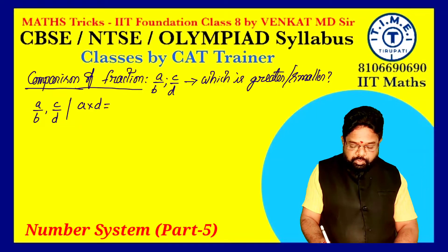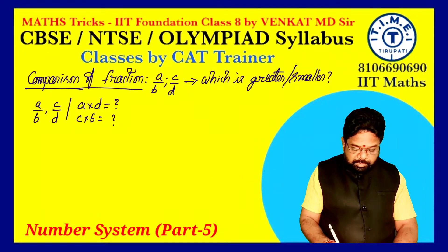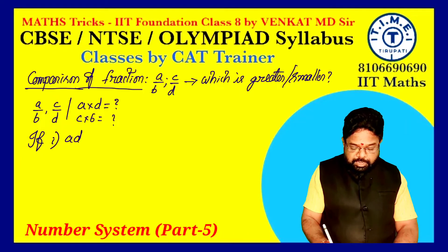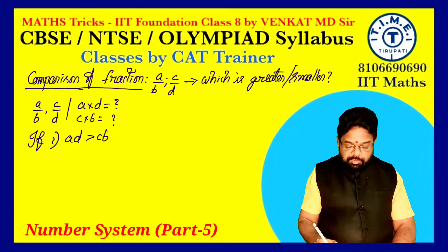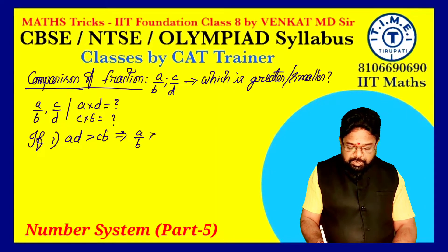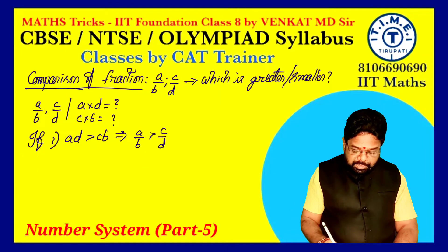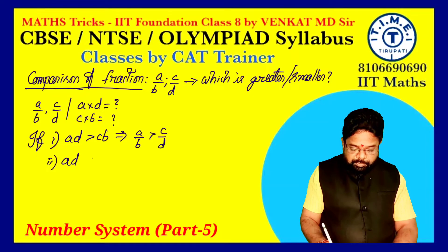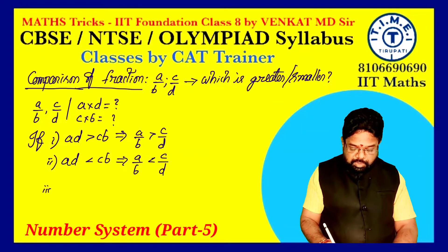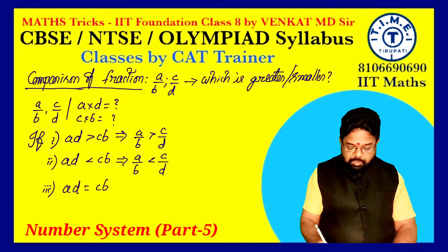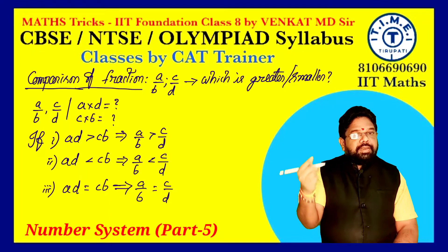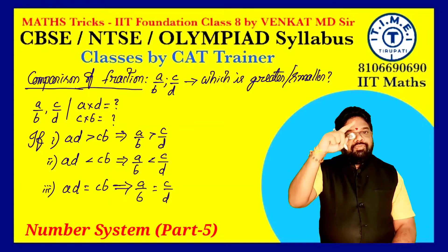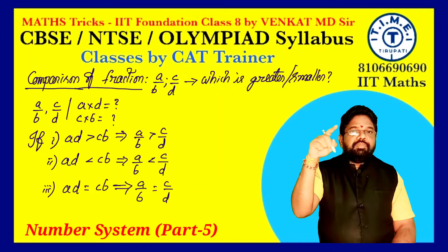For fractions A/B and C/D, just do the cross multiplication: calculate the value of A×D and C×B. If A×D is greater than C×B, then A/B is greater than C/D. If A×D is less than C×B, then A/B is less than C/D. If A×D equals C×B, then A/B equals C/D.